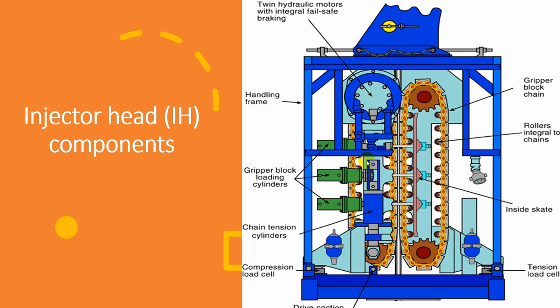We also have load cells which feed the weight measurement of the coiltube. They can measure both compression and tension.